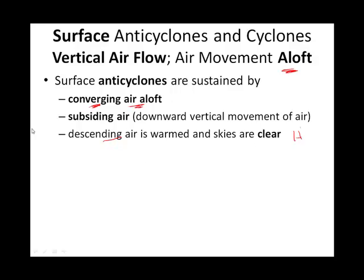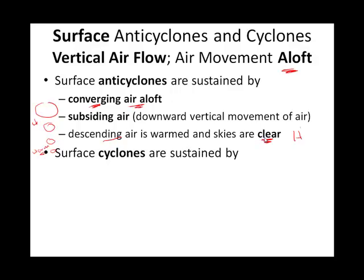If you take a chunk of air and it descends, its volume will decrease and it will warm. Anticyclones are noted for their nice warm weather. As it warms, the saturation amount increases — that is to say, you need more water vapor in order to saturate it. So anticyclones are generally associated with clear skies, because descending air warms and will be clear.